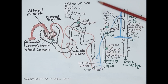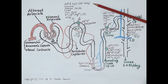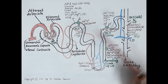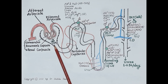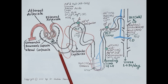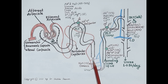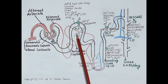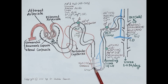Water is reabsorbed isoosmotically — for every molecule of sodium reabsorbed, a molecule of water follows. Out of 180 liters of filtrate, only 1 to 1.5 liters of urine is produced, meaning 99 percent of the filtrate is reabsorbed at different sites in the renal tubule. In the proximal convoluted tubule, 65 to 70 percent of sodium and water is reabsorbed.